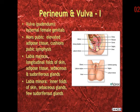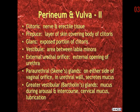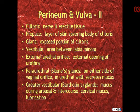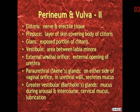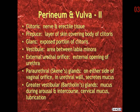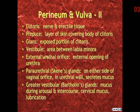The inner folds are the labia minora, which contain sebaceous glands and a few sudoriferous glands. The clitoris is the nerve and erectile tissue for the female, which has a prepuce or layer of skin covering the body. The glans is the exposed portion of the clitoris. The area between the labia minora is the vestibule. The external urethral orifice is the opening to the urethra. Skene's glands are located on either side of the vaginal orifice in the urethral wall and secrete mucus.